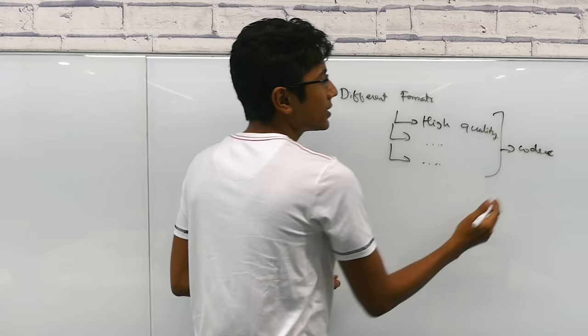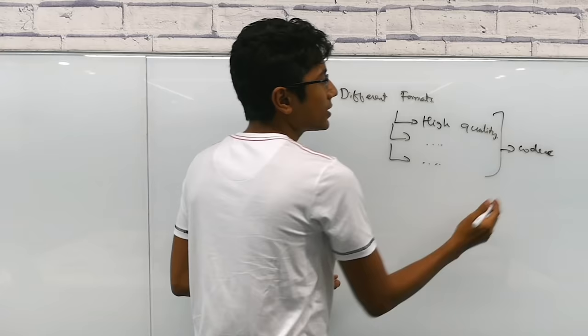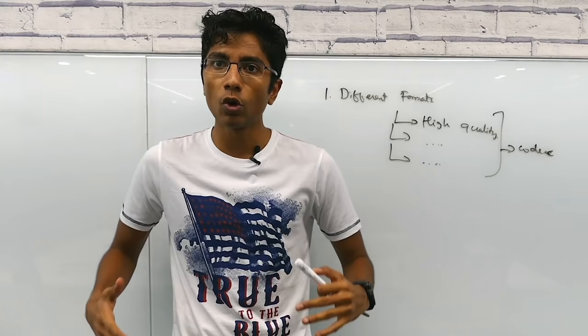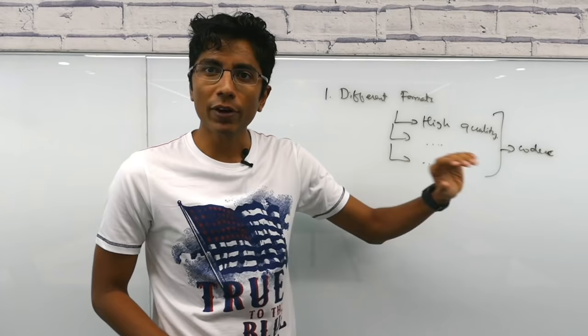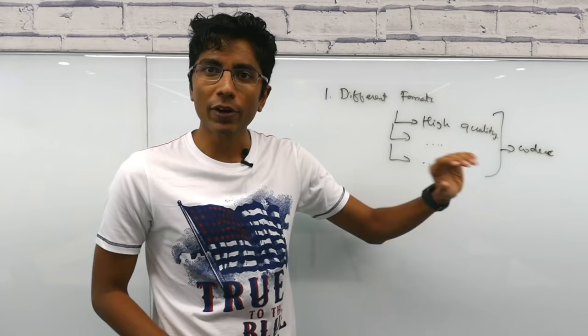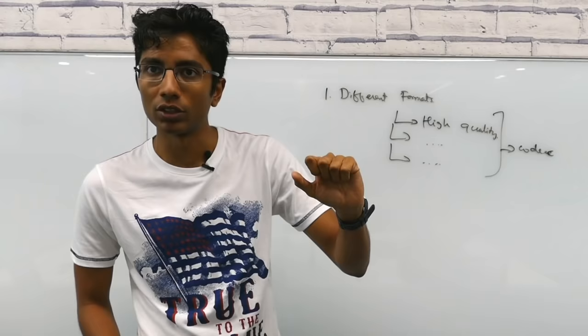A codec is a way in which you compress video. Originally this video right now is taking a lot of detail. But when I edit this video, I'll make sure the file size is not huge. I'll try to keep it within one GB. So that is one type of codec. If I reduce the quality more, the file size reduces because it's lossy compression. I'm losing some data to keep the file size smaller.